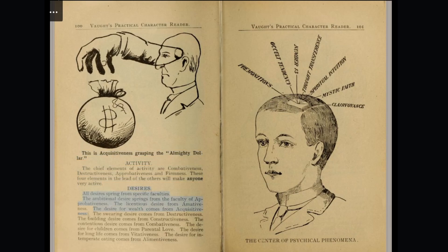Desires. All desires spring from specific faculties. The ambitional desire springs from the faculty of approbativeness. The licentious desire from amativeness. The desire for wealth comes from acquisitiveness. The swearing desire comes from destructiveness. The building desire comes from constructiveness. The desire for contention comes from combativeness. The desire for children comes from parental love.